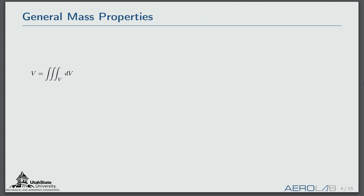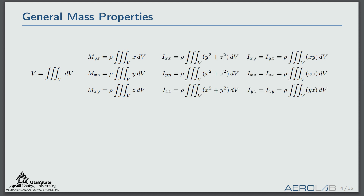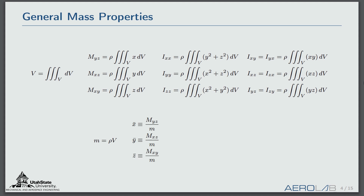First I wanted to start with some analytic equations. When we talk about volume, we're doing a triple integral over some finite volume of an object. The equations for the moments involve pulling density outside the integrals because we're approximating density as constant. These are the equations for determining the moments of inertia on the left and the products of inertia on the right. Mass equals density multiplied by volume, and we use these moments divided by mass to calculate the center of gravity. We're using a positive tensor definition, so the off-axis components have a negative sign — that's convention for aircraft.